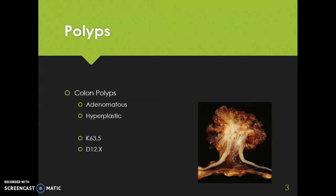Polyps are another common thing you will see as a coder. Polyps are growths that form on the lining of the colon, and the type of polyp is used to predict if that polyp growth will develop into cancer. We have adenoma or adenomatous polyps — those are the most common and most likely to turn into cancer. The second most common type is called a hyperplastic polyp, which has a small chance of turning into cancer.